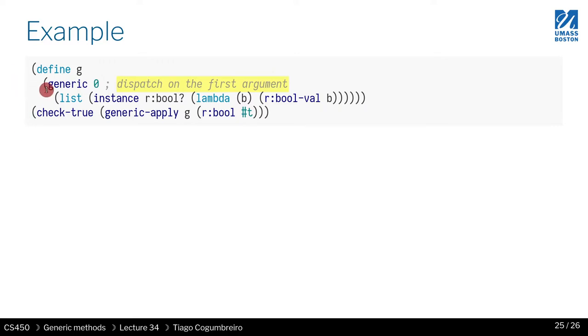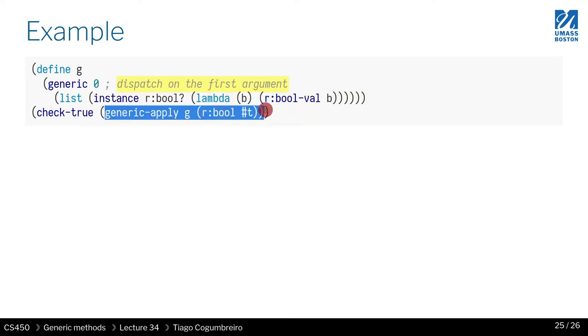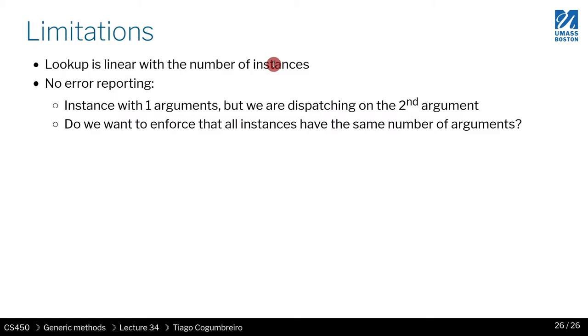Finally, we can call this code just by instantiating the generic, saying which index is being dispatched on, and then providing the current instances and finally calling with generic apply.